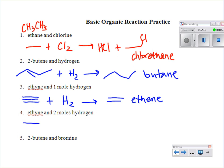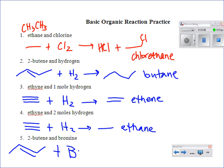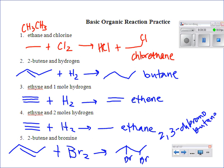Ethyne plus one mole of H₂: saturation to ethene. Ethyne plus two moles of H₂: saturation to ethane. Then 2-butene plus Br₂: addition over the double bond. Br goes to each carbon of the former double bond at positions two and three, giving 2,3-dibromobutane.